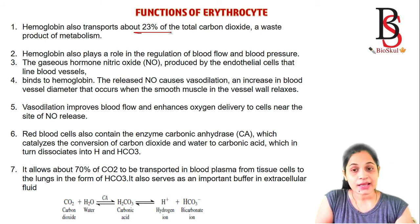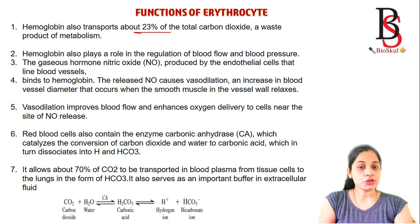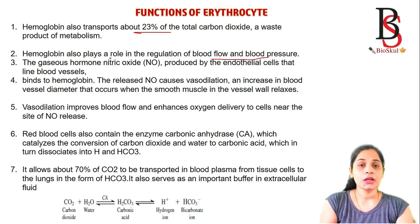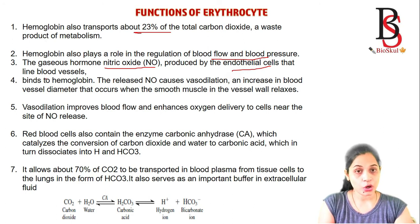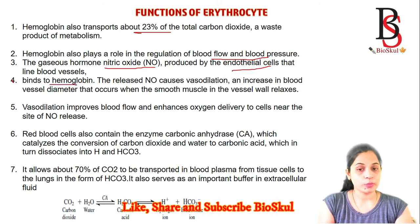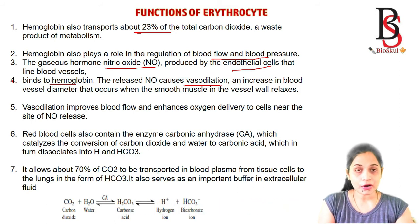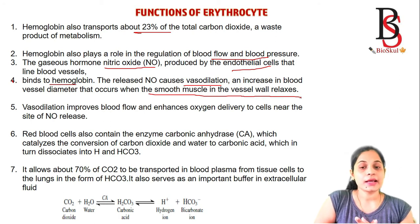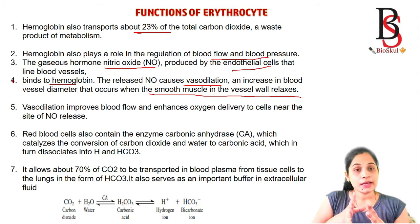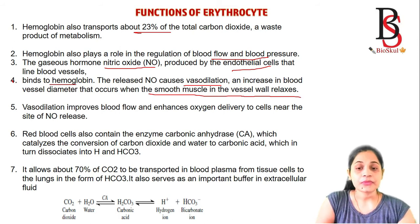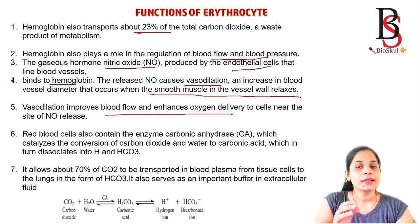Hemoglobin transports about 23% of the total carbon dioxide, the waste product of metabolism. Hemoglobin also plays a role in the regulation of blood flow and blood pressure. Nitric oxide, a gaseous hormone produced by endothelial cells lining blood vessels, binds to hemoglobin and causes vasodilation — dilation of blood vessels — when released, increasing vessel diameter as smooth muscle in the vessel wall relaxes.